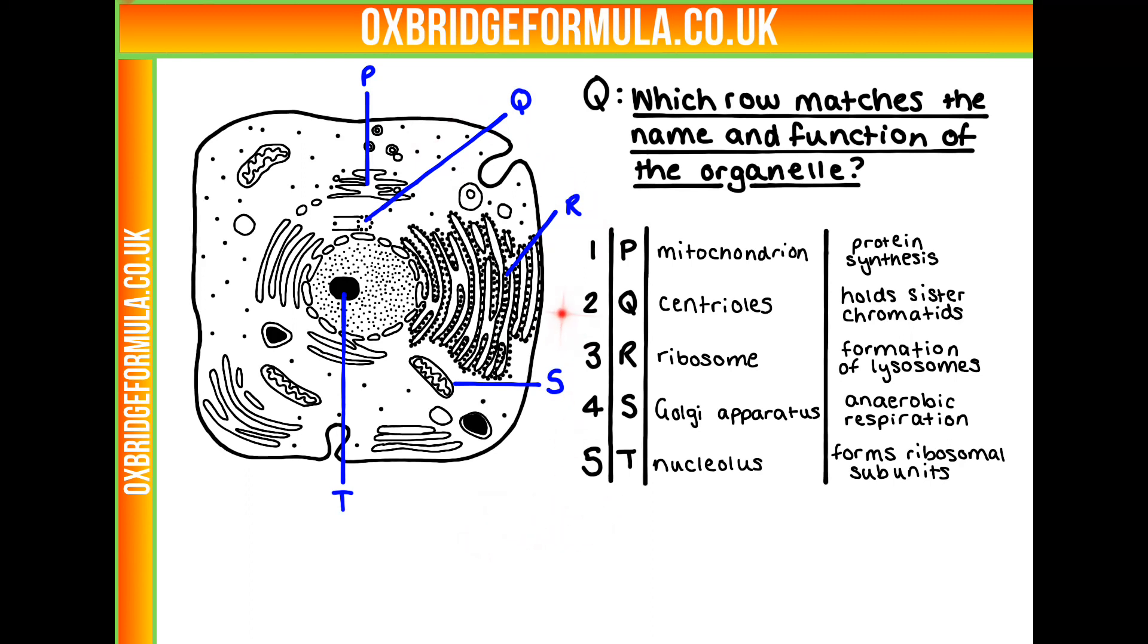First of all, let's not look at the table for now. Let's try and name each organelle just using the information we have in the cell. If we start up here, we have this banded structure. What could P be?